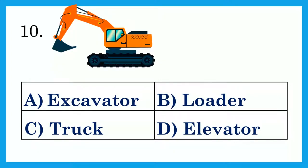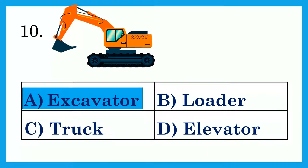Look at the picture and choose the correct word for it. Option A: Excavator. Option B: Loader. Option C: Truck. Option D: Elevator. The answer is Option A: Excavator.